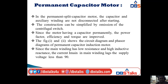In those three methods, we used some capacitor in series with auxiliary winding. In all the circuit diagrams, we have two windings: one is main winding and the other one is auxiliary winding. In those methods, we removed the auxiliary winding after starting the motor. But in the permanent capacitor motor, the capacitor and auxiliary winding are not disconnected after starting. The construction can be simplified by omission of the centrifugal switch.